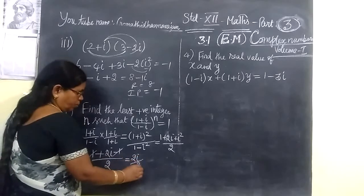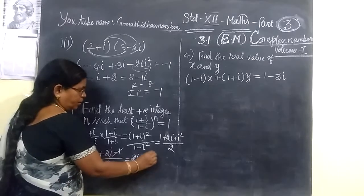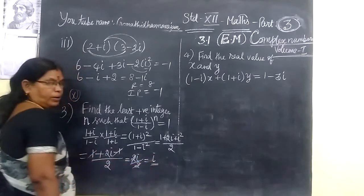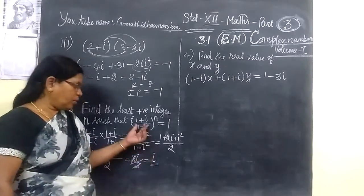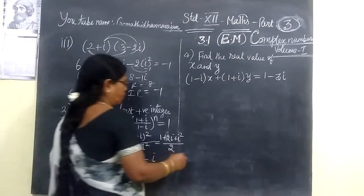Here, 2i by 2. This also will be cancelled. So finally, you are getting i over i. In the i over i, you get substitute.